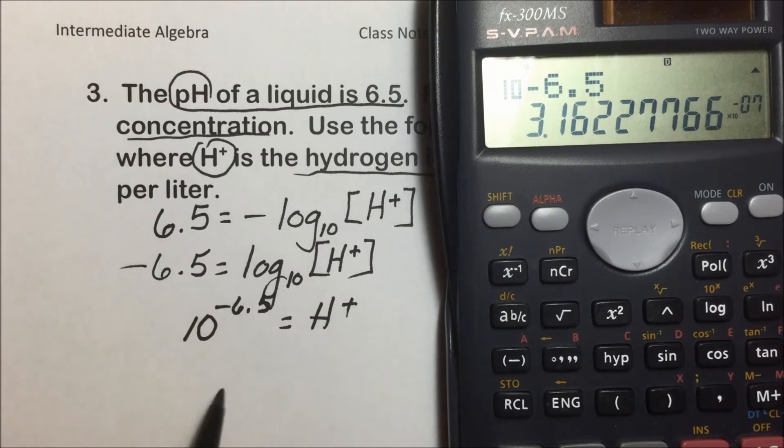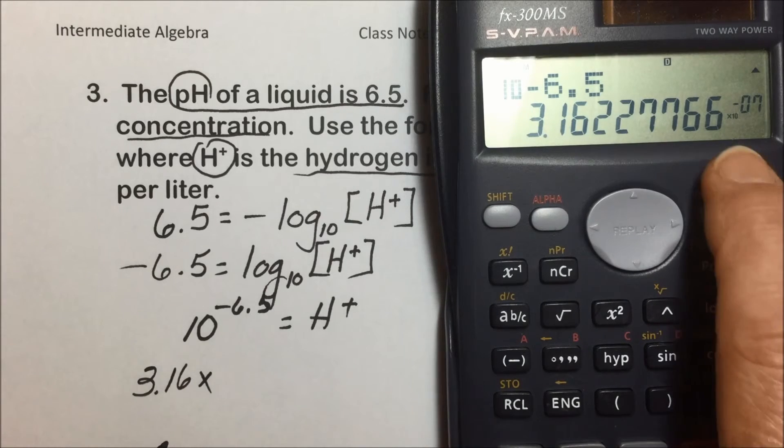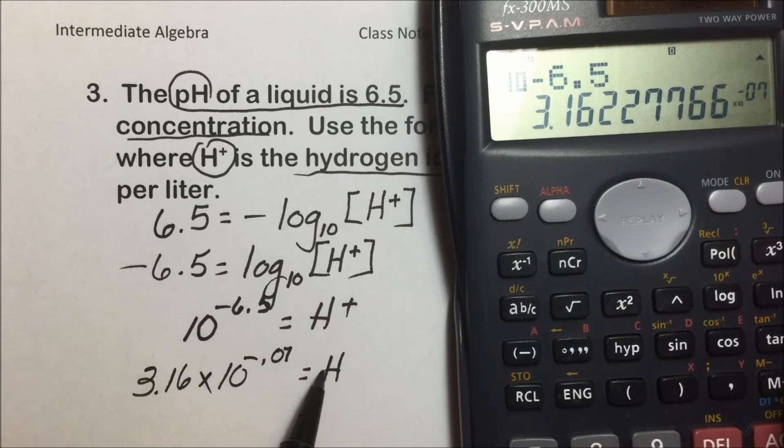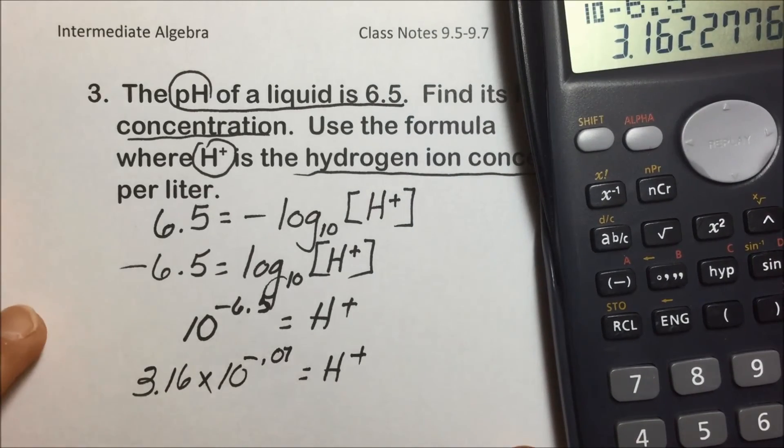And we end up with a value of 3.16, and it's rather small. And if you notice here on the display, we have scientific notation times 10 to the -07 power is the hydrogen ion concentration.